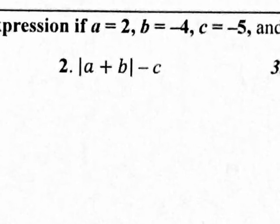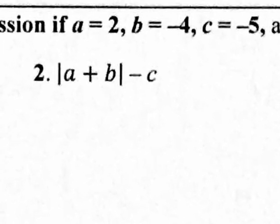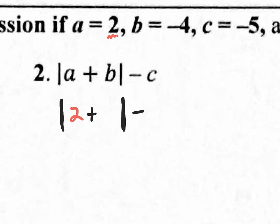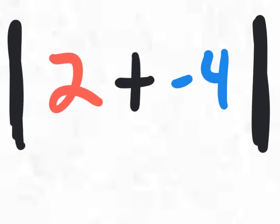Number 2 has parts A, B, and C. A is 2, B is negative 4, C is negative 5. The best way to do this is to rewrite the expression exactly as it is, but plug in the given values instead of A, B, and C. Remember, absolute values are like parentheses — you zoom in and do whatever math you can inside those absolute value bars first.